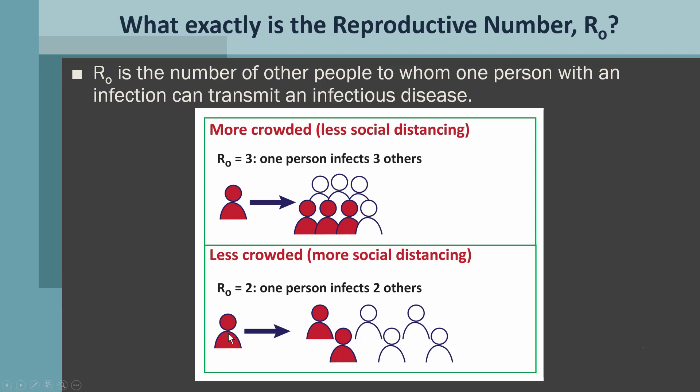The same thing with R0 equals two: one will give it to two, and then these two will give it to four, four will give it to eight. So the exponential rise will be less if the R0 is two. If the R0 is one, then that one person is giving it to one other person, and that person gives it to another, and so instead of having an exponential rise, you'll have a stable number of cases appearing every day. If R0 decreases below one, then you have a case where the number of new cases every day is falling or decreasing.